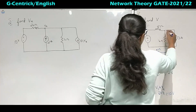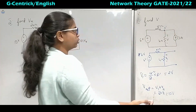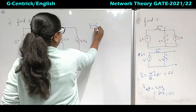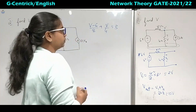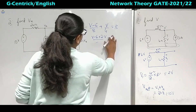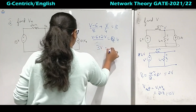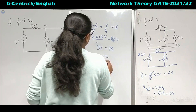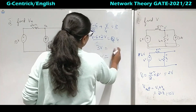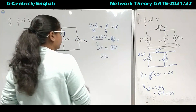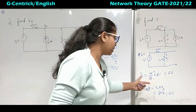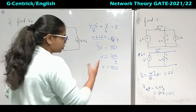Using nodal analysis, we take this as the node voltage and this as the reference. The nodal equation is: (V minus 6) by 8 plus V by 4 equals 3. Taking LCM as 8: V minus 6 plus 2V equals 24, giving 3V = 30, so V = 10 volts. Both methods give the same answer of 10 volts — confirmed by both nodal and superposition.